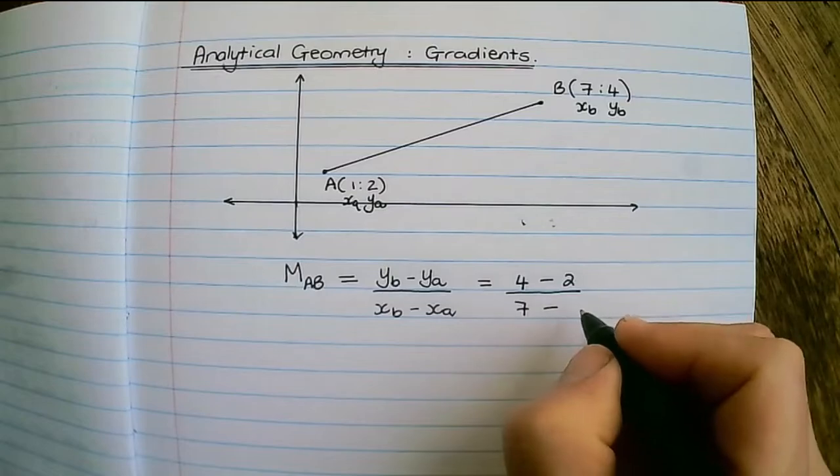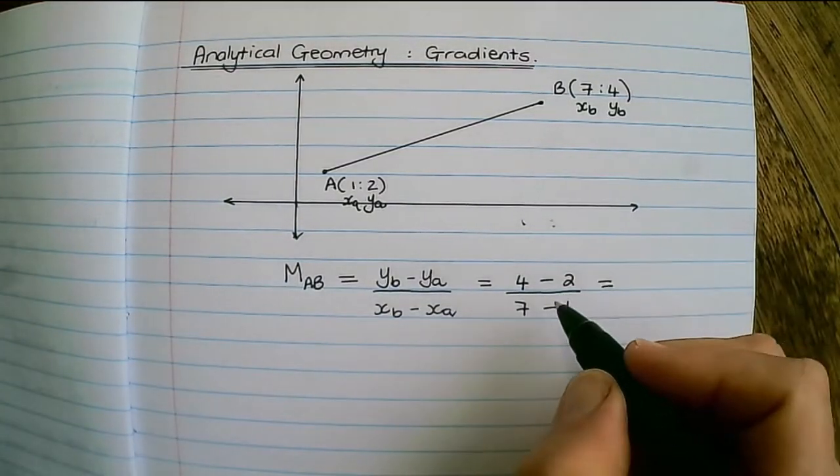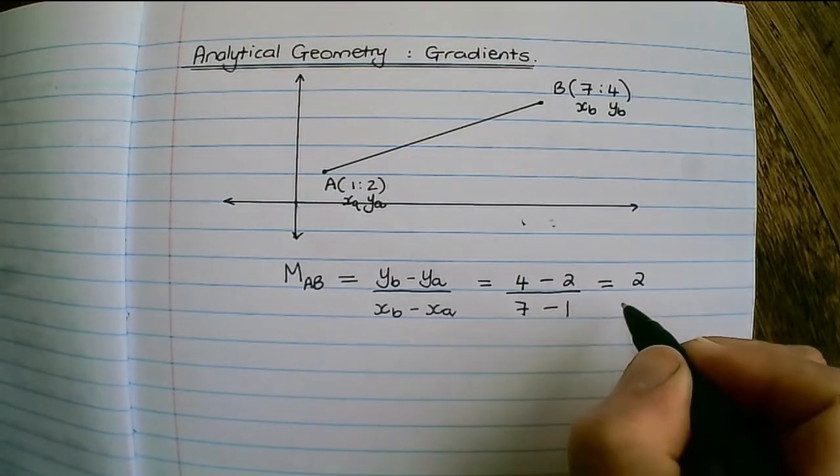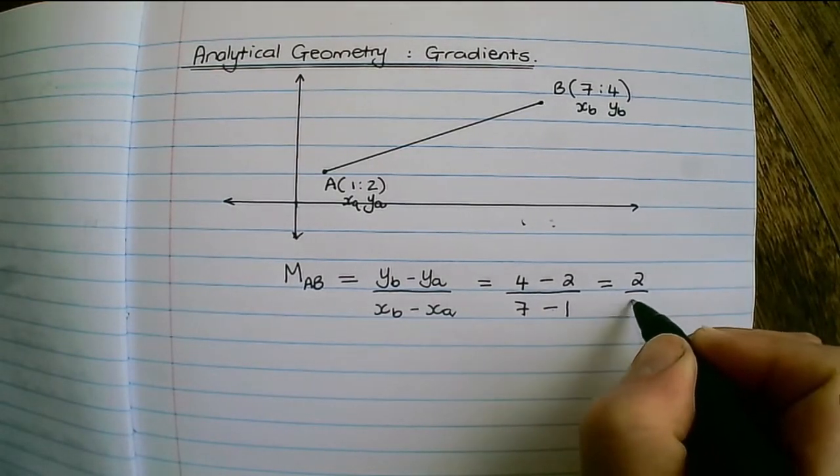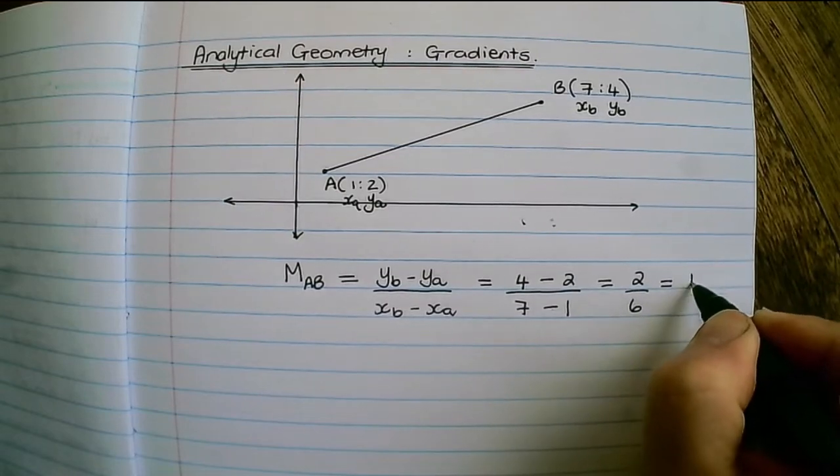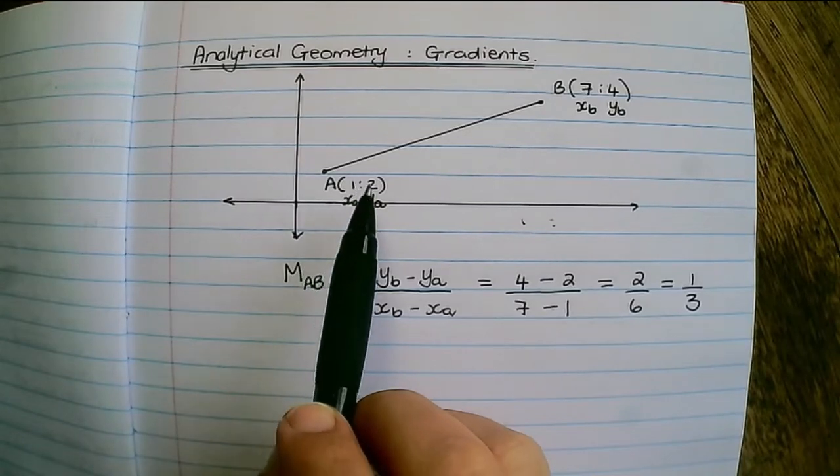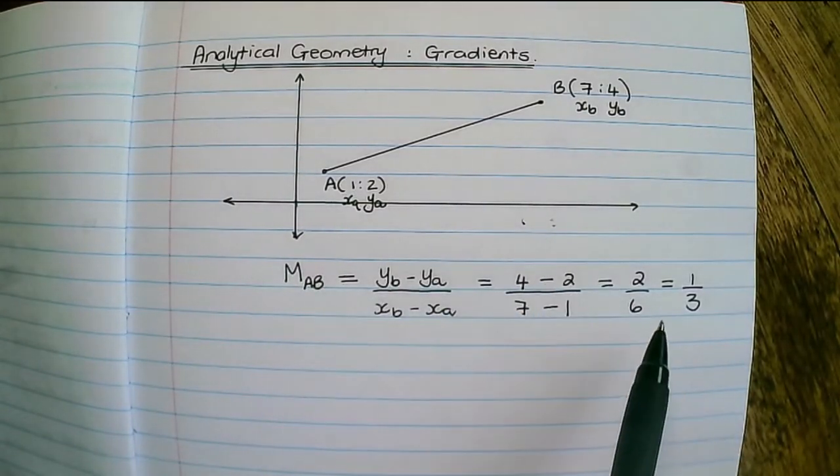which is 1. And then we simplify, so it's 4 minus 2 which is 2, and 7 minus 1 which is 6. I can always simplify further, so the gradient between the line A and B is one third.